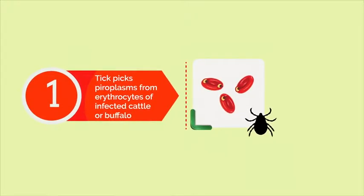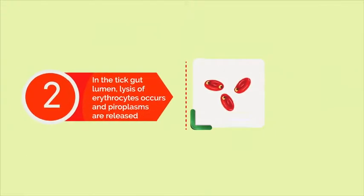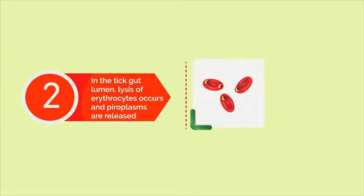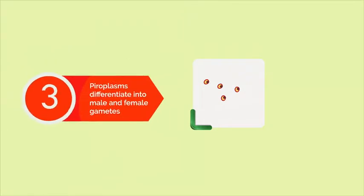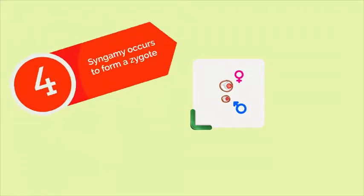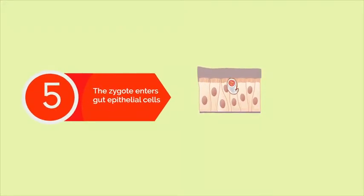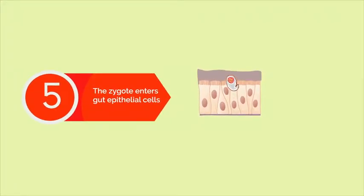Step 1: The tick picks pyroplasms from erythrocytes of infected cattle or buffalo. Step 2: In the tick gut lumen, lysis of erythrocytes occurs and pyroplasms are released. Step 3: Pyroplasms differentiate into male and female gametes. Step 4: Syngamy occurs to form a zygote. Step 5: The zygote enters gut epithelial cells.